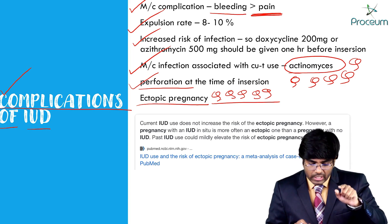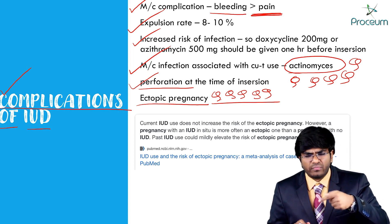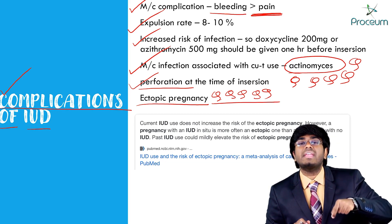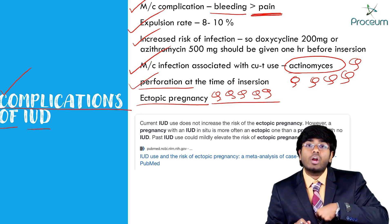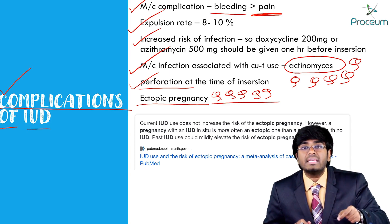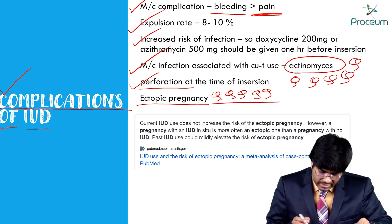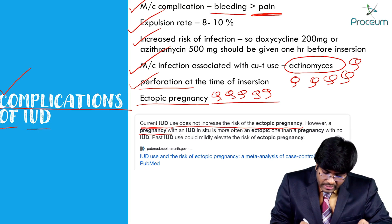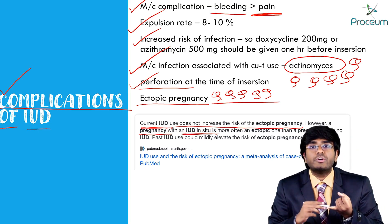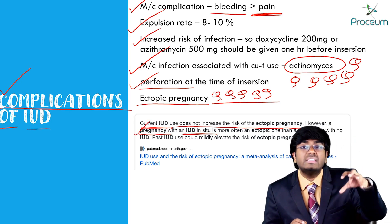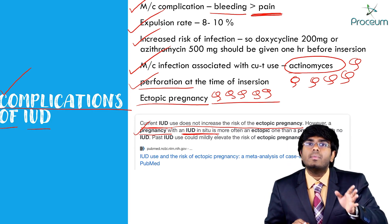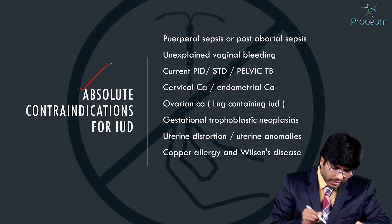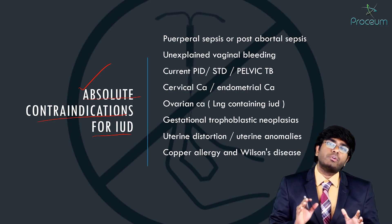Current IUD use does not increase the risk of ectopic pregnancy. However, if pregnancy occurs with an IUD in place — meaning the IUD has failed — then 30% of those pregnancies will be ectopic. So a failed IUD with resulting pregnancy carries a 30% risk of ectopic pregnancy.